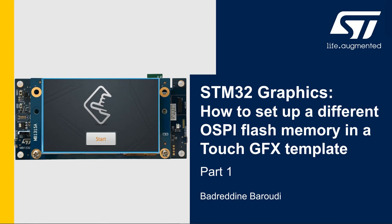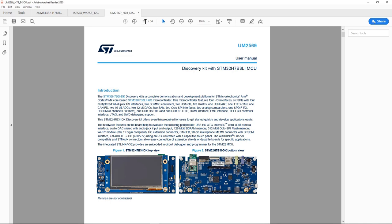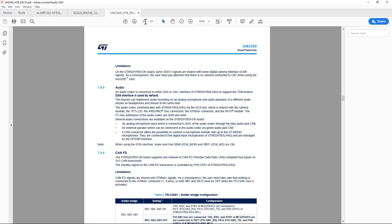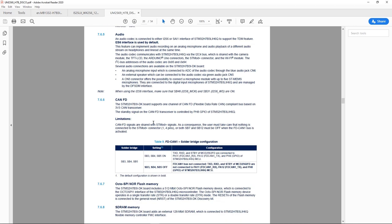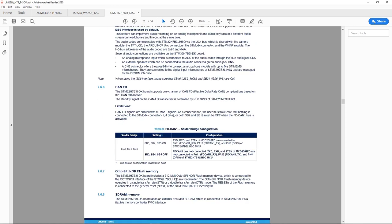Hello and welcome to this presentation. My name is Bedardin and in this video we'll learn how to set up a different OctoSPI flash memory in TouchGFX template. In this first part we'll see how to set up the OctoSPI peripheral in STM32CubeMX. If we look at page 20 of the STM32H7B Discovery Board user manual, we see that it has a 512 megabit OctoSPI NOR flash memory. We'll see what changes need to be done to use a different memory from a different vendor and a different flash size in TouchGFX application.